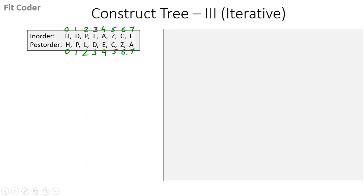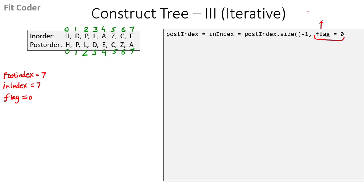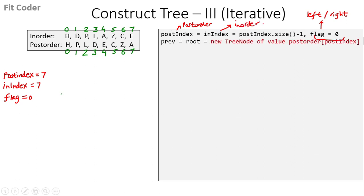Given these two traversals inorder and postorder, the first step of the pseudocode is to keep two variables: postindex and inindex, both pointing to the last element of the traversal. The array size is 8, so both point to the seventh element. We also have a flag variable which helps us decide whether to create the left child or the right child. Then we keep two variables, previous and root, and create a new tree node of value postorder[postindex]. Since postindex is 7, the seventh index is A, so we create a new tree node with value A. Both previous and root point to it.